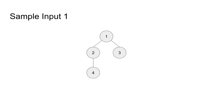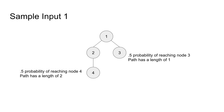Let's look at the sample input. This is a tree with four nodes and three edges. We start at node 1, which has a 50% chance of going to node 3 and a 50% chance of going to node 2. There's a 0.5 probability of reaching node 3, and that path has length 1. From node 2, there's a 50% chance we reach node 4 from node 1, since node 2 has only one child. So the probability of reaching node 4 is 0.5 and the path has length 2. Our output is 0.5×1 + 0.5×2 = 1.5, which is the answer.